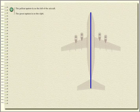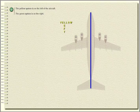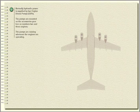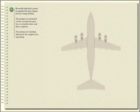The yellow system is on the left of the aircraft. The green system is on the right. Normally, hydraulic power is supplied by two engine-driven pumps. The pumps are mounted on the accessories gearbox on numbers 2 and 3 engines.